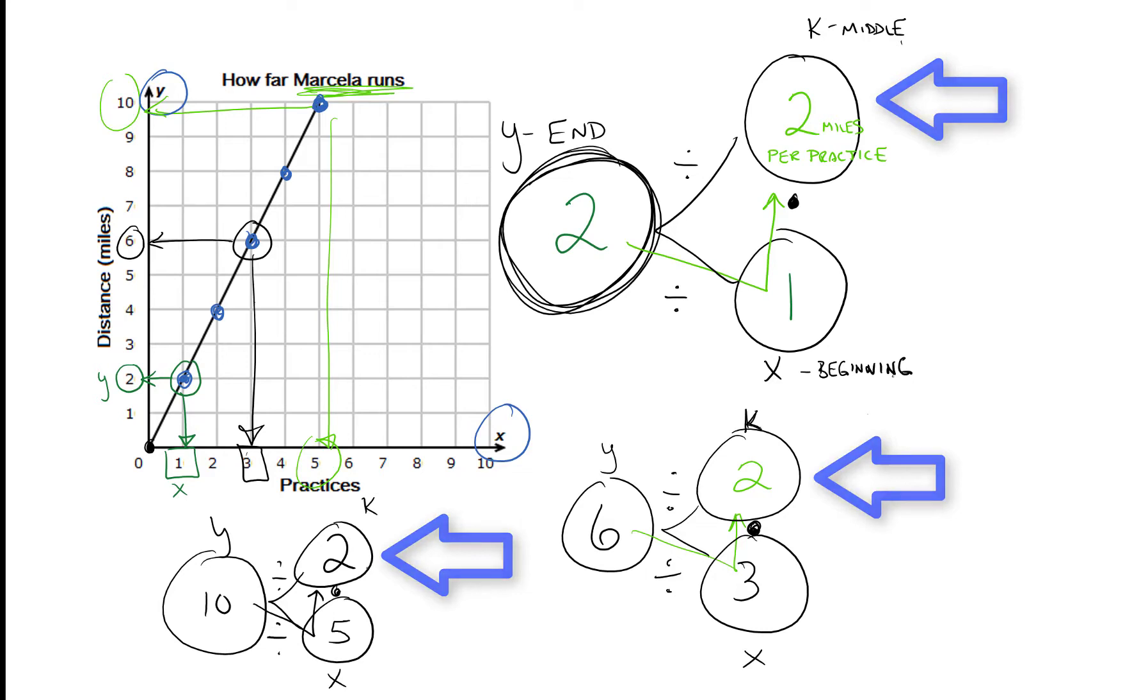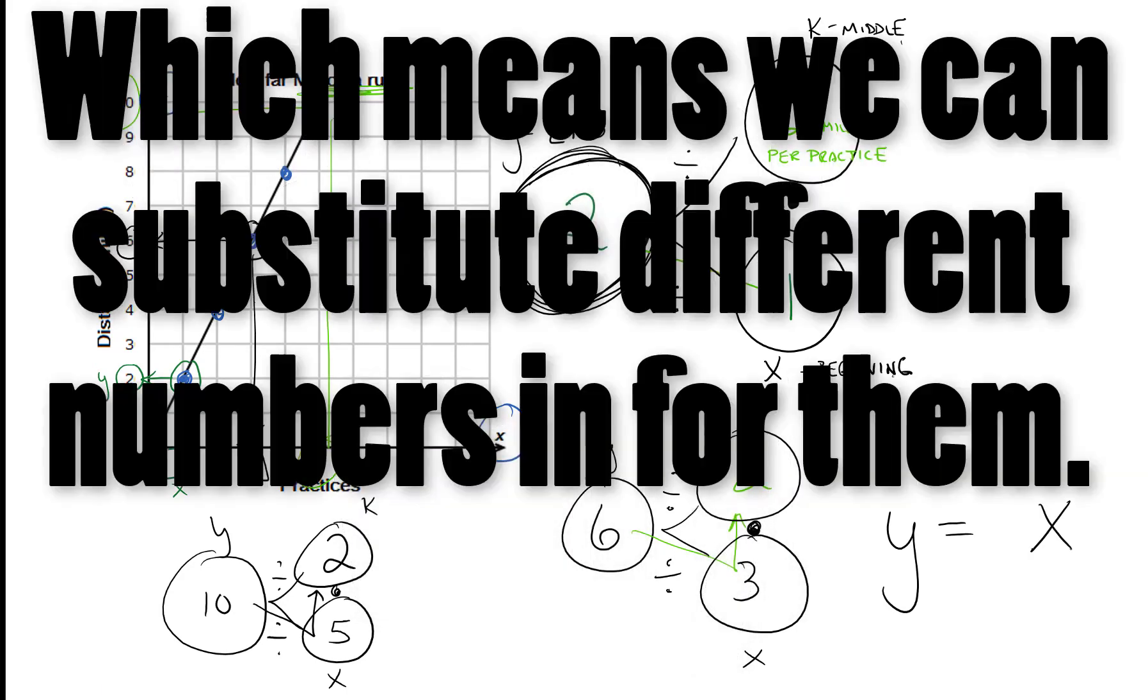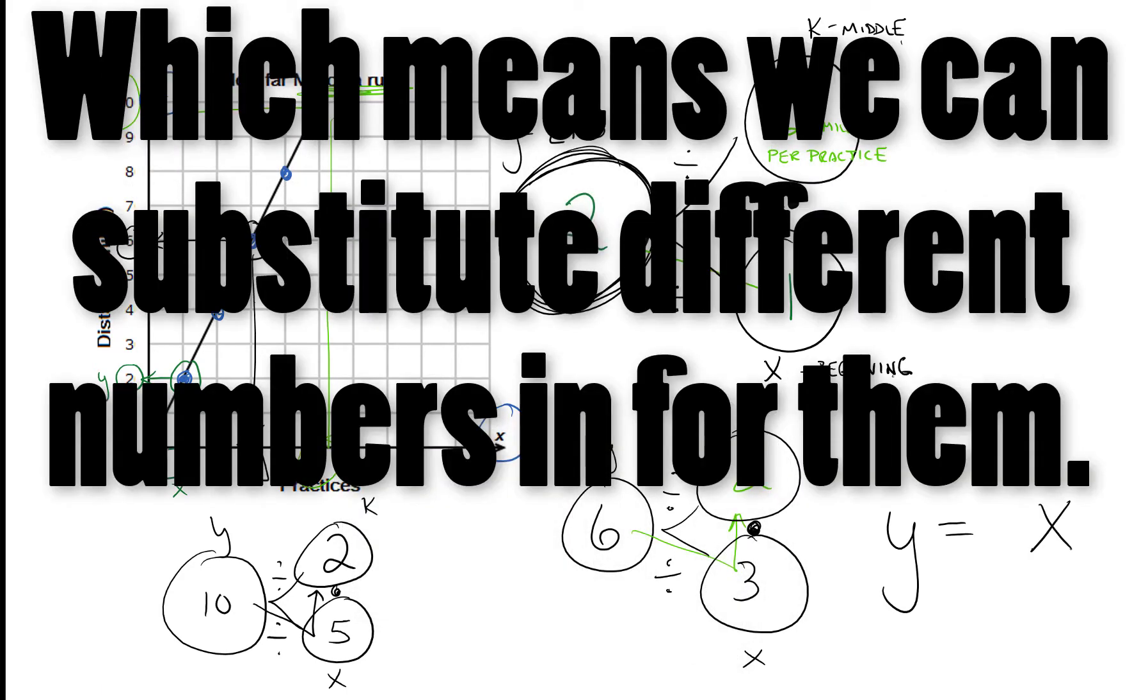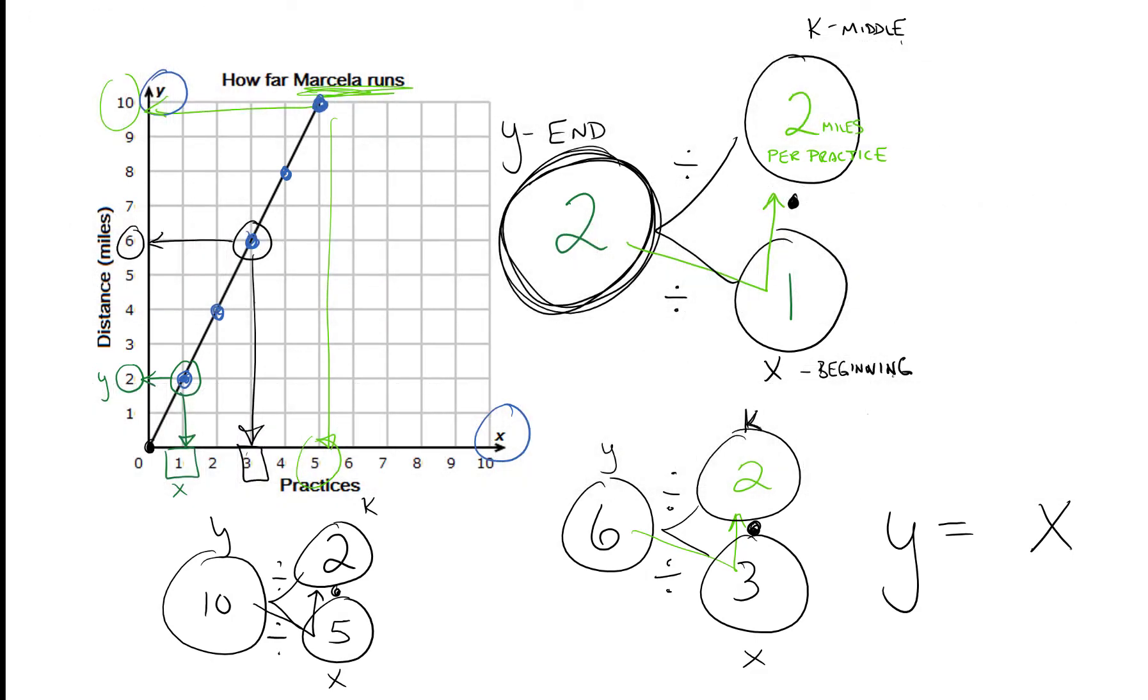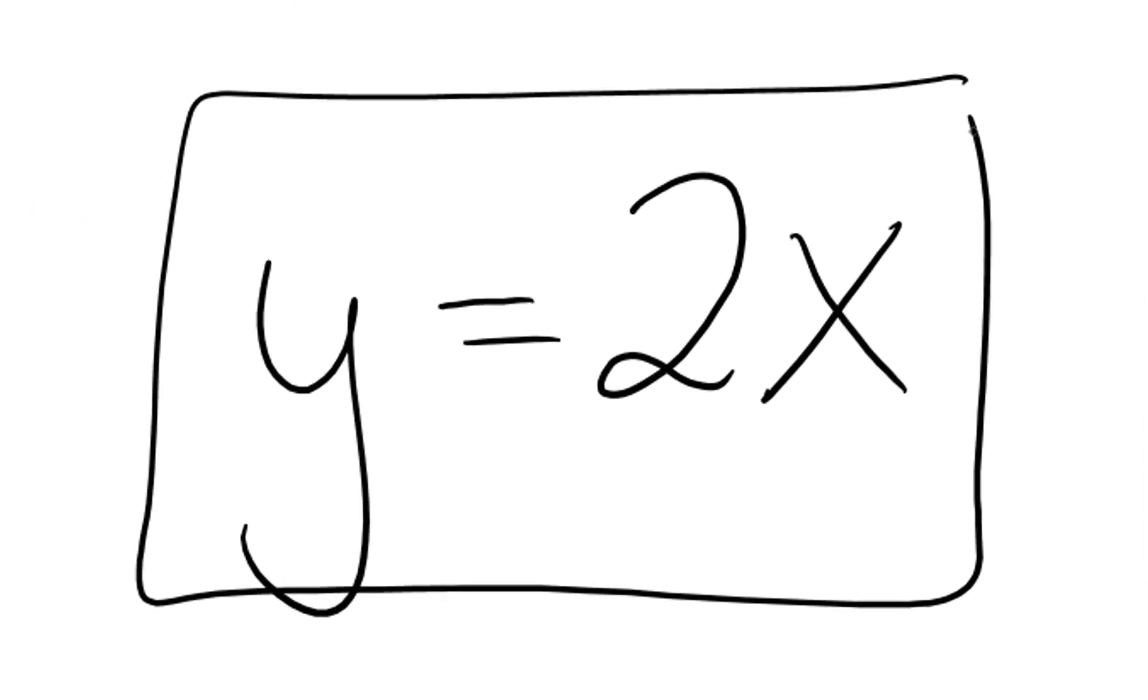From this, what we can do is not only understand the constant of proportionality is going to be 2 miles per practice, but we can also understand the relationship between y and x. y and x are in the equation. When we write the equation, because they change, we're not going to write down something that changes - we've got to use a variable. The one thing that won't change though is the constant. Every time they practice, they're running 2 miles per practice. We can put that into our equation, and now we've written a successful equation.